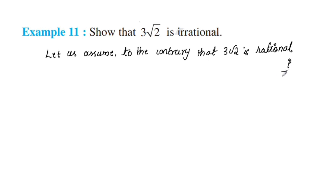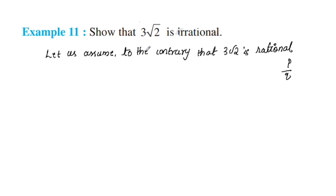That is the co-prime. What is the co-prime? The co-prime means they do not share the same factor. The common factor of A and B is 1. These are called co-prime numbers. I will explain what the co-prime number is.